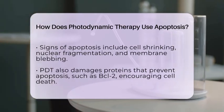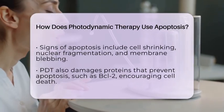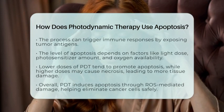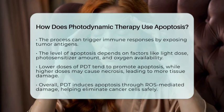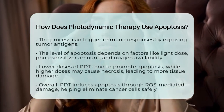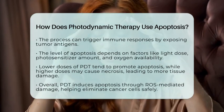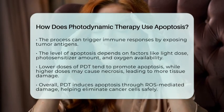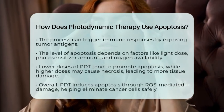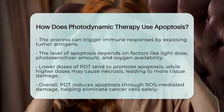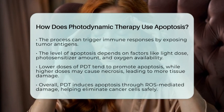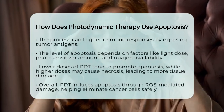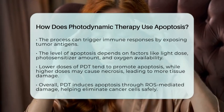The amount of apoptosis versus other cell death types depends on factors like the dose of light and photosensitizer used, as well as oxygen levels in the tissue. Lower doses tend to promote apoptosis, which is cleaner and causes less inflammation, while higher doses might lead to necrosis, which can cause more tissue damage.